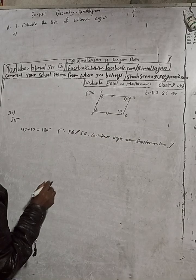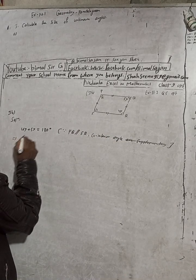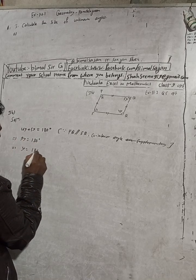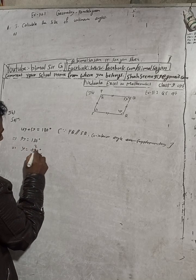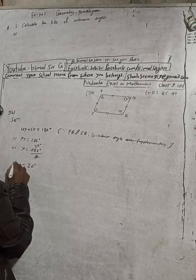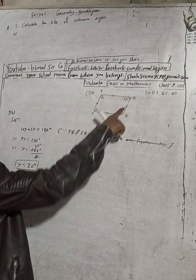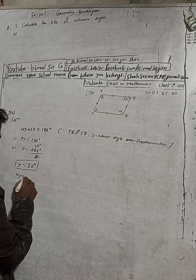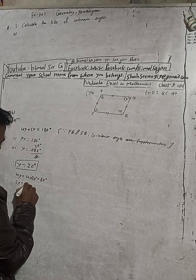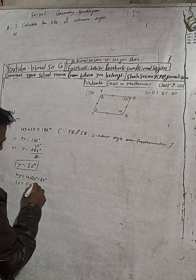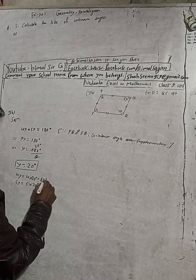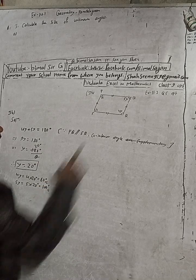Now we can solve this. 4y plus 5y equals 9y, which equals 180 degrees. Therefore y equals 180 divided by 9, which is 20 degrees. So y equals 20 degrees. Now 4y equals 4 times 20, which equals 80 degrees. And 5y equals 5 times 20, which equals 100 degrees.